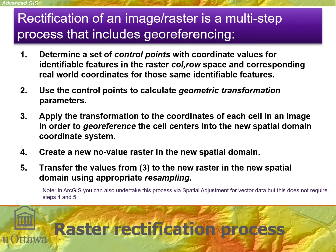We use a number of those control points and then apply equations that will transform the raster into the real world coordinate system. We get those control points first, and then use them to calculate the geometric transformation necessary to bring our raster — which has no coordinate system except column and rows — into the real world. Once we calculate that transformation, we apply it to each coordinate for each cell in an image, and it's now geo-referenced.